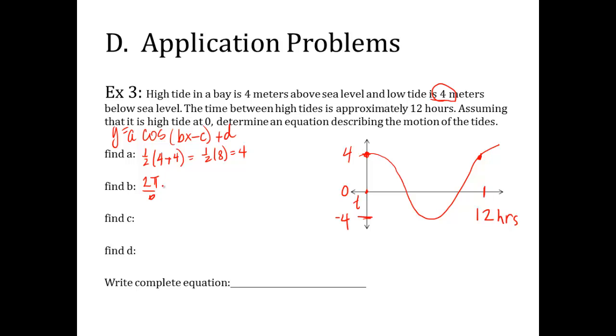b, 2 pi over b is equal to the period. Well, the period is the time it takes from high point to high point, low point to low point. Well, that's 12 hours, right? So that's the 12. If I cross multiply that, divide by 12. So b is equal to pi over 6.